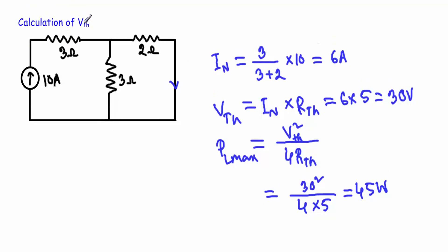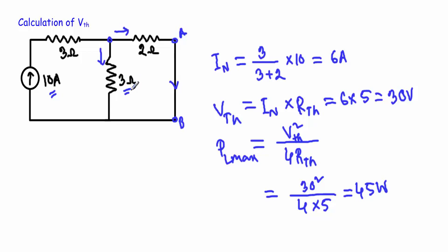Next, we calculate the Thevenin voltage VTH. I short terminals A and B and calculate the Norton current through that path. We have only a current source of 10 amperes. The current remains the same up to the junction point, then splits — one current flows through each path. The Norton current IN flows through one path. Applying the current divider rule, the current through that resistor equals the opposite branch resistance (3 ohms) divided by the sum (3 + 2), multiplied by the total current, giving 6 amperes.